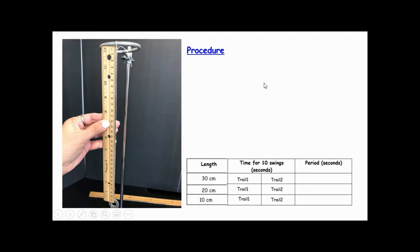For procedure, you are going to use just one washer. Make sure the string has 30 centimeters length from the fixed point right on the ring clamp up to the washer, but do not include the washer.